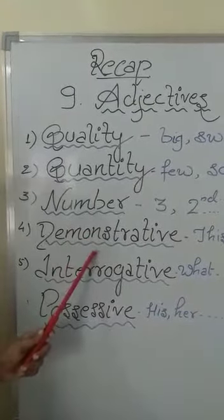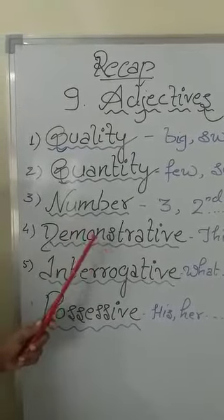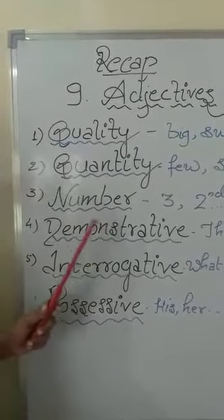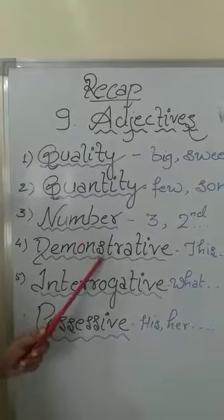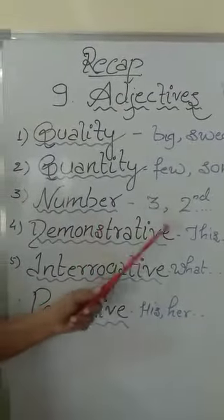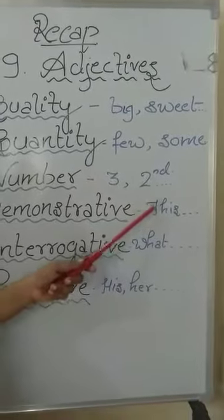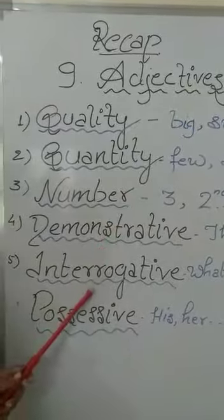Next is demonstrative adjective. The words that point out something or point out the noun or pronoun. They are called demonstrative adjectives. The examples are this, that, these, those, etc.